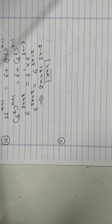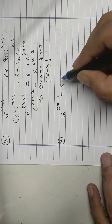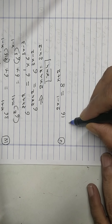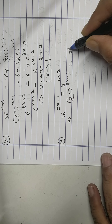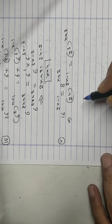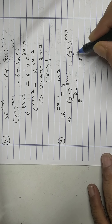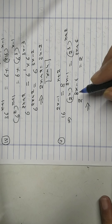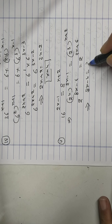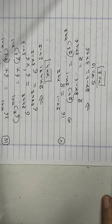Part 5. 16 raised to 2x minus 1, equals 8 raised to x plus 2. Convert: 2 raised to 4, that raised to 2x minus 1, equals 2 cubed, that raised to x plus 2. So 2 raised to 8x minus 4, equals 2 raised to 3x plus 6. Base is same so powers equal: 8x minus 4 equals 3x plus 6, so 5x equals 10, therefore x equals 2. Video ends.